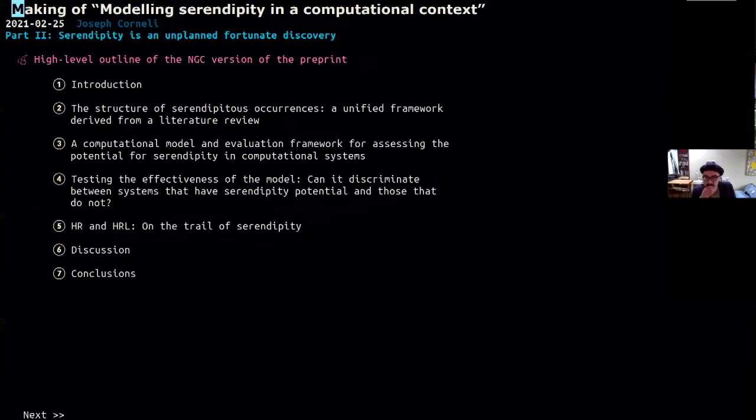So just because we don't have time to go through the whole preprint, one of which of its characteristics is it's quite long in most of those versions. Here's a high level outline of what we talked about. So obviously, an introduction, we talked about the structure of serendipitous occurrences, distilling that from literature. Then we presented something we termed a computational model and evaluation framework for assessing the potential of serendipity in computational systems, which we then tried to apply to look at some examples, including two systems, which were discovery systems called HR and HRL. And then we wrapped it all up.